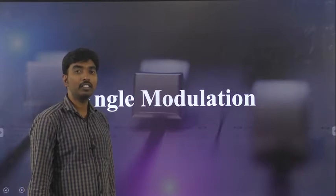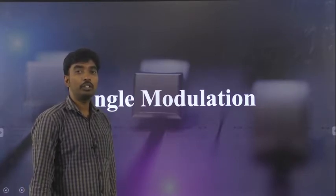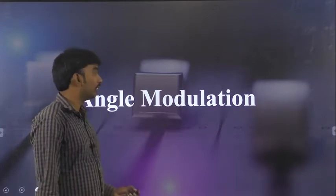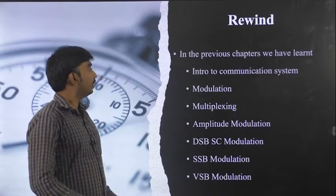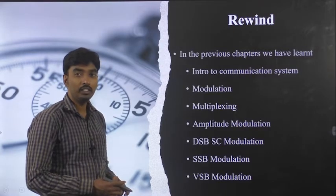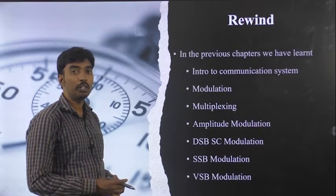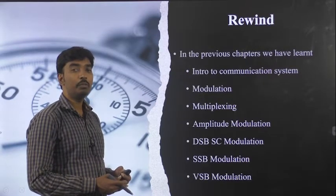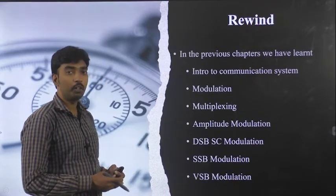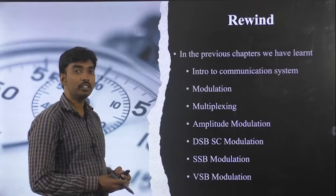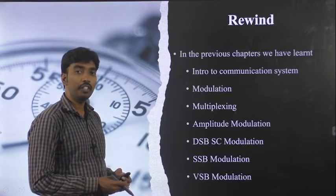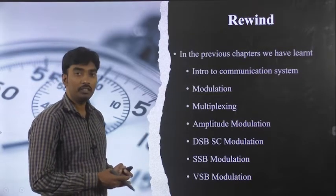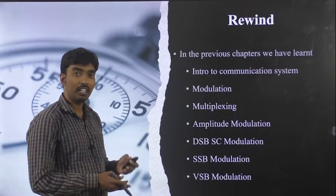Hello everyone, welcome back to the lecture series on analog communication. We are going to discuss Unit 3: angle modulation. Before discussing angle modulation, let us revise what we discussed in the last two units. Communication is nothing but the exchange of information from one place to another. For better communication, we have to modulate the input message signal. Modulation is the process of changing the characteristics of a high frequency carrier signal with respect to the instantaneous values of the message signal, and by doing so we can multiplex various signals and transmit over a single channel.